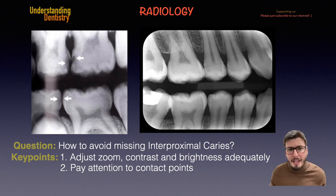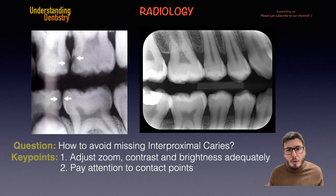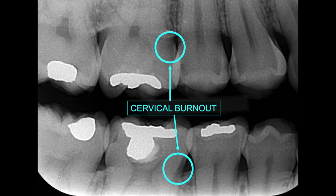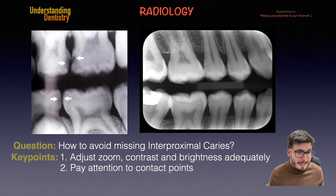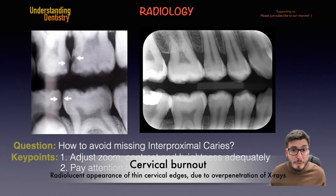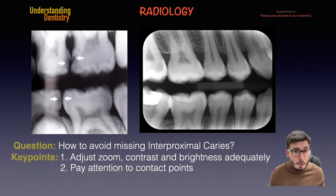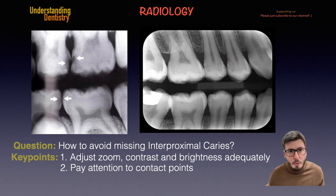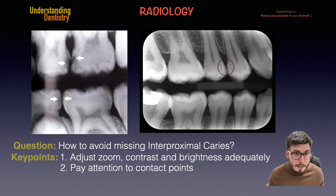Pay attention to the contact points. Usually the radiolucencies we see on the cervical side of the tooth, close to the alveolar crest and the CEJ, are cervical burnouts. Caries will likely happen on the contact points — that's something we need to remember. We are now seeing those initial caries as examples.